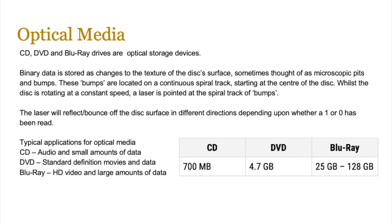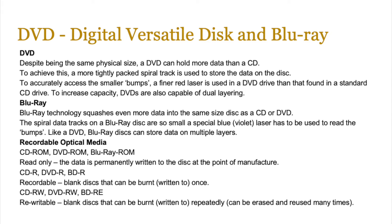Optical media discs are often made from polycarbonate plastic with a coating of aluminium or metal that can be burnt with a laser. Typical applications: CDs for audio and small amounts of data, DVDs for standard definition movies and data, Blu-ray for high definition video and large amounts of data. CDs normally hold 700 megabytes, DVDs up to 4.7 GB for a single layer, and Blu-ray discs can go up to 128 GB. A DVD can hold more data than a CD by using a different laser beam with a smaller wavelength — both CD and DVD normally use a red laser. Blu-ray uses a blue laser with an even smaller wavelength, squeezing even more data onto the same size disc.